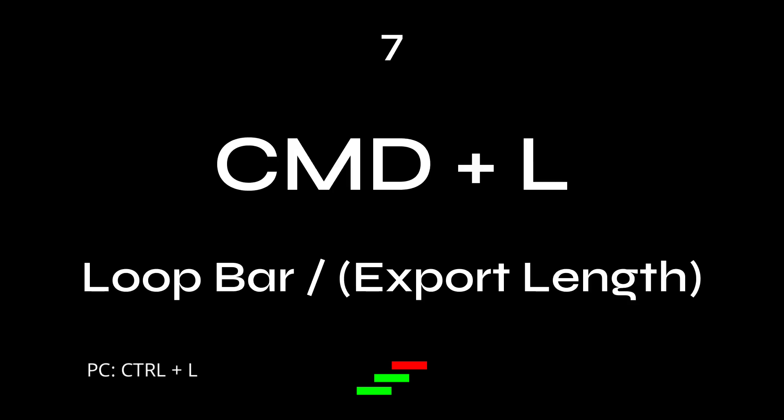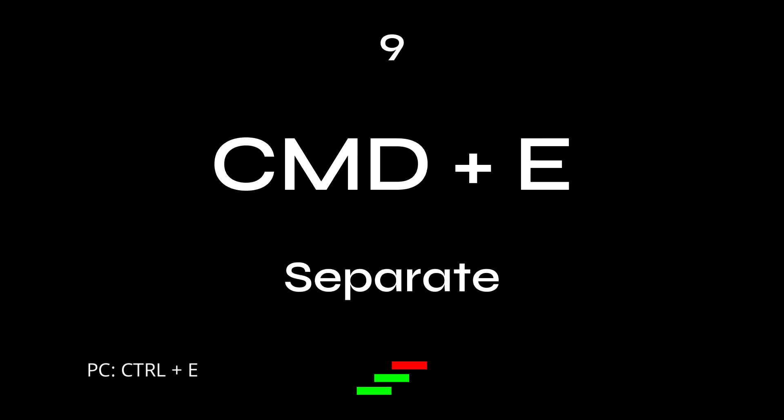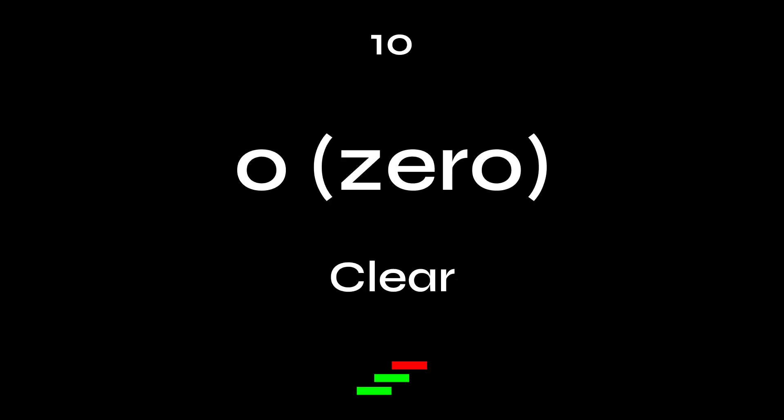Seven: Command-L — toggle loop bar. This is also used to highlight the audio when you export. Eight: Command-D — duplicate. Nine: Command-E — separate. Ten: Zero — clear.